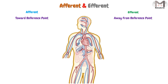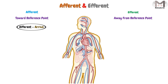We will definitely be confused and forget which is the 'toward' and which is the 'away' term, so there is a simple way to memorize these terms clearly. We will relate the afferent term with the word 'arrive' — they both begin with 'A'. Because the afferent, as we know, is toward the reference point, and 'arrive' means we came toward and reached the reference point. So we go from a structure and arrive toward the reference point — the afferent would arrive.